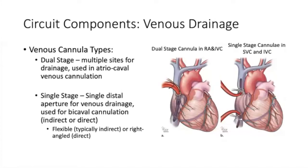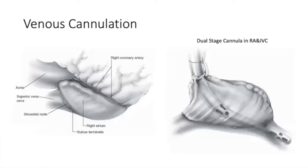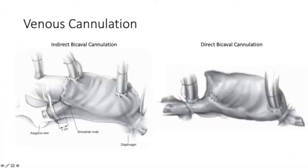For venous cannulation, there are dual-stage and single-stage cannulas. Dual-stage cannulas have side holes more proximally and at the tip for multiple drainage sites — very useful when cannulating the right atrium and feeding into the IVC. Single-stage cannulas are placed directly or indirectly into the IVC for true right heart isolation, with or without snaring of the cavae. Important anatomic considerations include avoiding the medial right atrium near the AV groove to prevent right coronary artery injury, and avoiding the sinoatrial node. A common access site is the right atrial appendage.